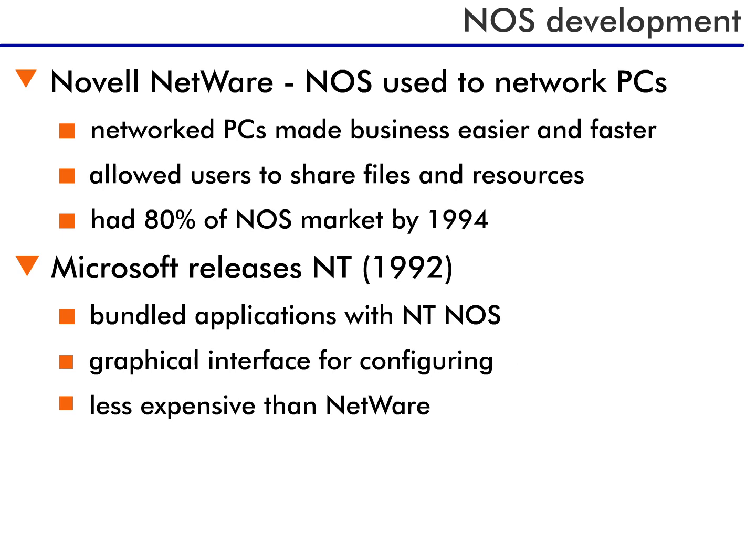So how did the NOS develop? Until 1983, network operating systems were used mostly on mainframe computers, allowing terminals to access files from the mainframe. The terminals were just used for displaying the information, so all the computing power resided in the mainframe. This, coupled with the slow-speed links to the mainframe, made network computing slow.